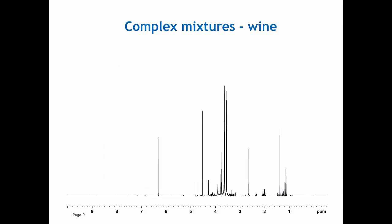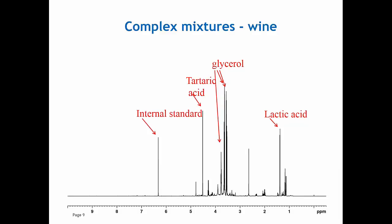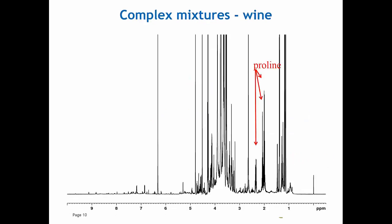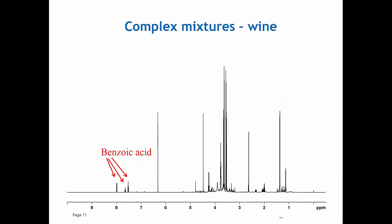On the complexity, let's have a look at wine. This attracts some interest as well, and you can see all types of compounds — for instance glycerol, tartaric acid, lactic acid, the internal standard that we used, which was maleic acid in this case, glutathione diol, succinic acid. And going deeper down you can also see proline, vitamin C, galacturonic acid, tyrosine, and even an adulterant — in this case it was actually spiked with benzoic acid — but you can even find those kinds of compounds.